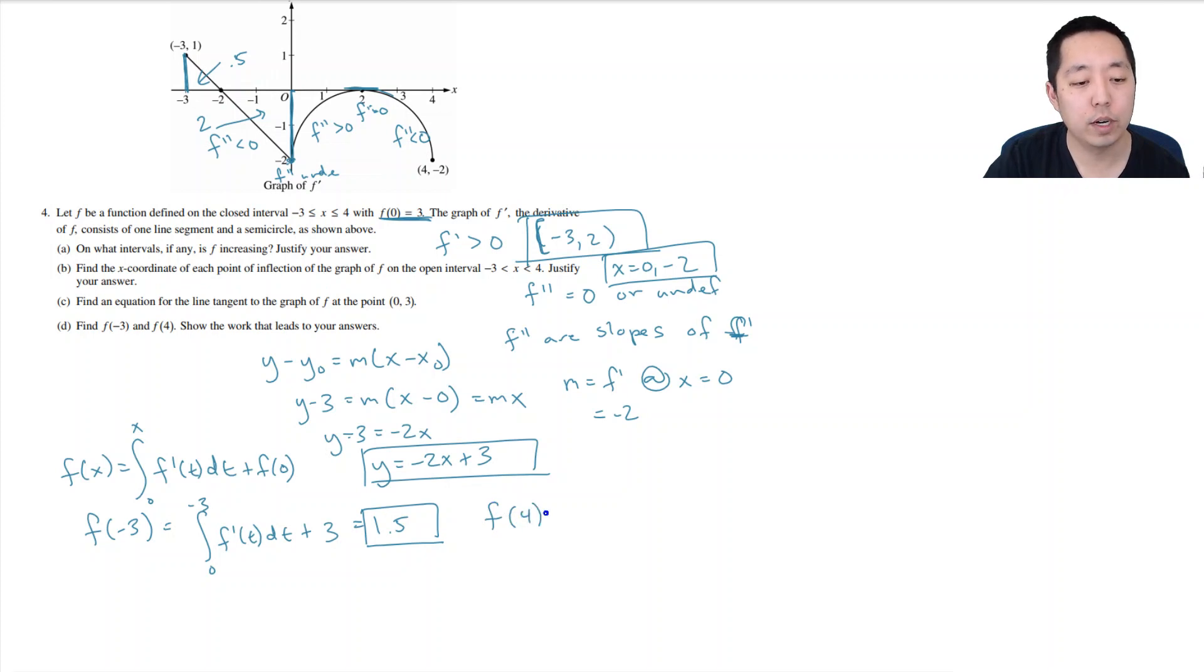And then if I want to do f of 4 I do the same thing. I'm going to integrate the area from 0 all the way to 4 out here. I want to find this area. It's all negative area.